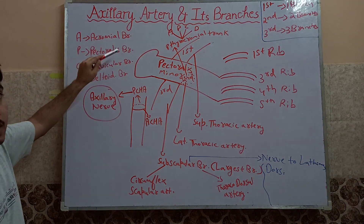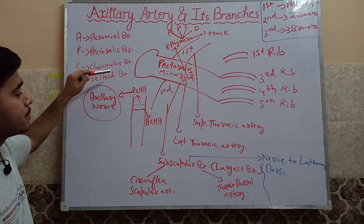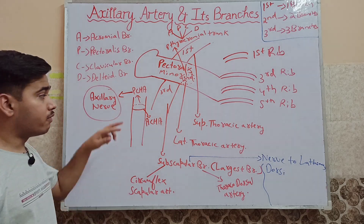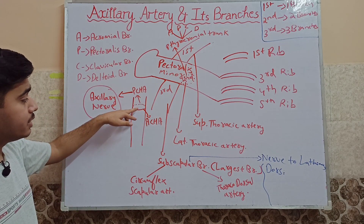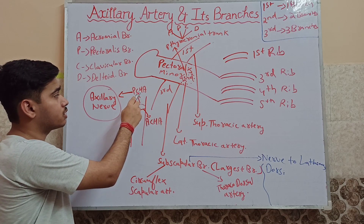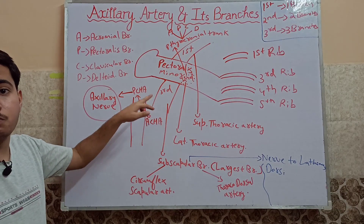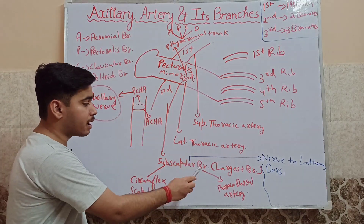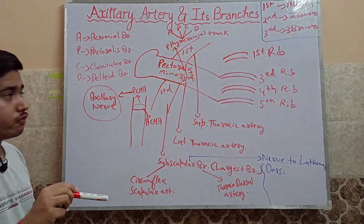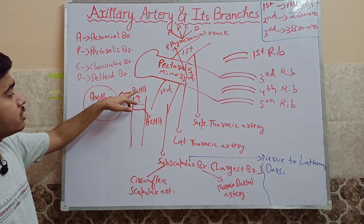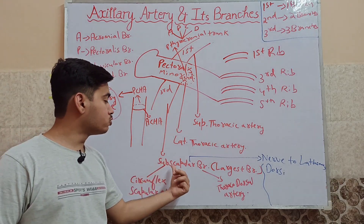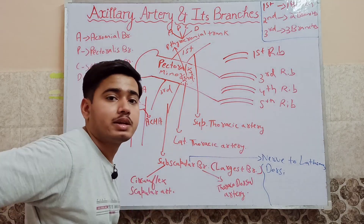In the APCD mnemonic: A = acromial branch, P = pectoral branch, C = clavicular branch, D = deltoid branch. The third part of the axillary artery gives us three branches. Two are near the surgical neck of the humerus — the anterior circumflex humeral artery on the anterior side and the posterior circumflex humeral artery on the posterior side. The third and largest branch is the subscapular artery, which gives two sub-branches: circumflex scapular artery and thoracodorsal artery. Clinically, a fracture at the surgical neck of the humerus around the posterior circumflex humeral artery will affect the axillary nerve, and the nerve running to the subscapular artery is the nerve to latissimus dorsi muscle.